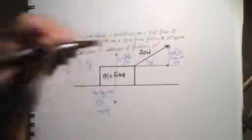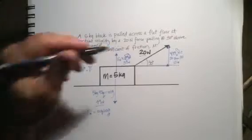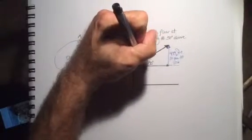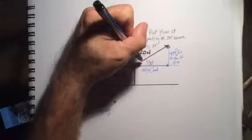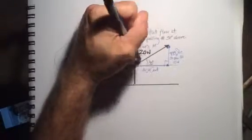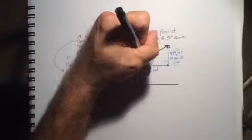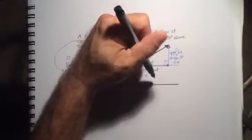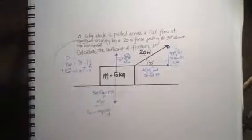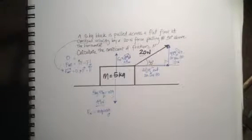So, that means the applied force here, this is the adjacent side of this right triangle. And 20 is our hypotenuse. So, we take the hypotenuse, 20 times cosine of 30. And that's equal to, 20 times cosine 30 is equal to 17.3.